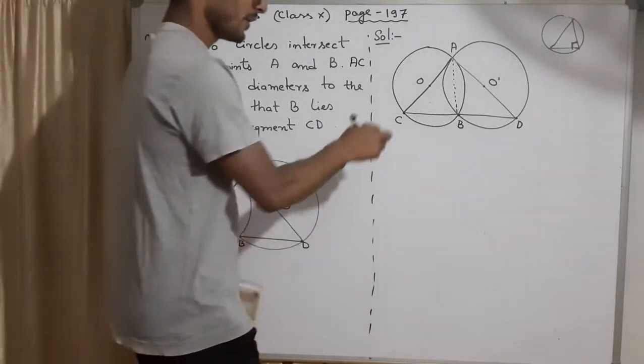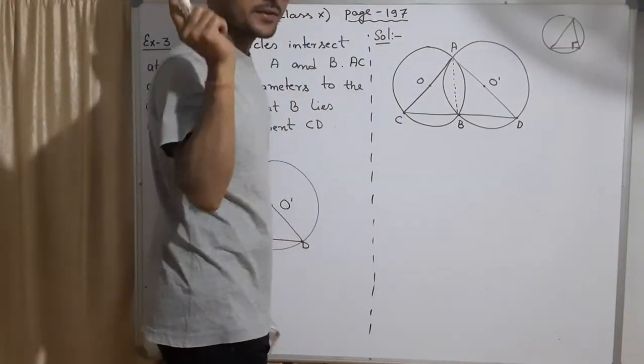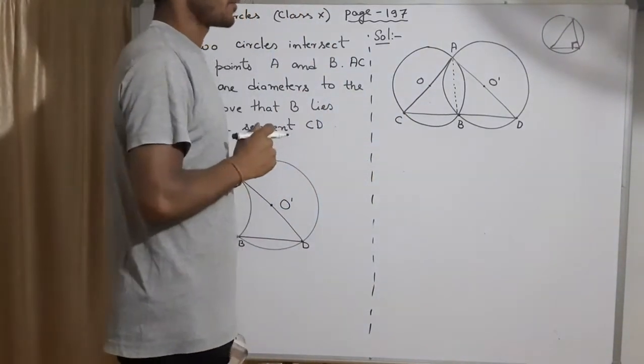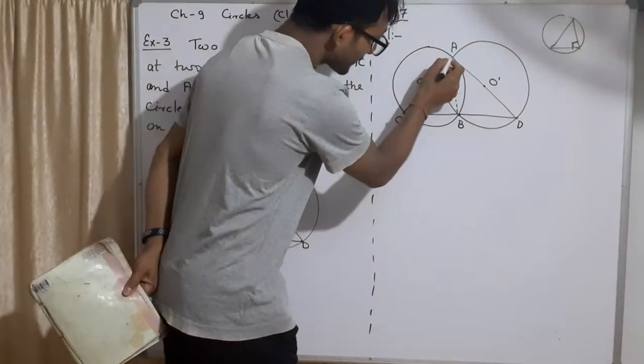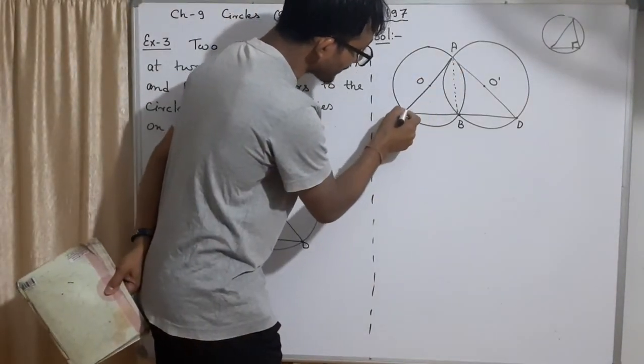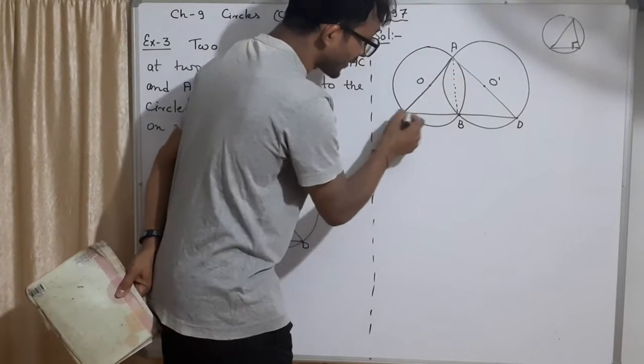9.3 says angle in the semicircle is right angle. So when I see the semicircle, it strikes here that there must be 90 degrees somewhere. But if I see this diameter, a semicircle, but there is no triangle. In order to make this a triangle, I have to join this.